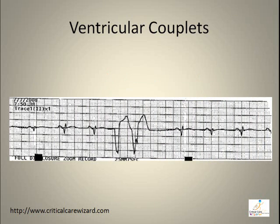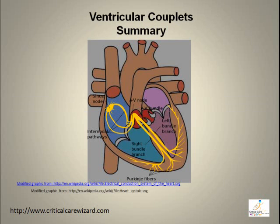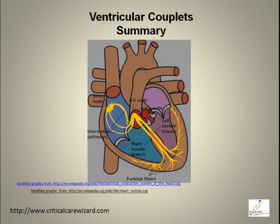Two PVCs in a row is called couplets. Ventricular couplets are paired early beats originating from the ventricular muscles. Normal conduction starts at the SA node with ventricular response.